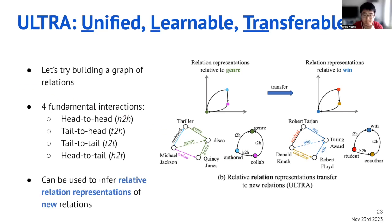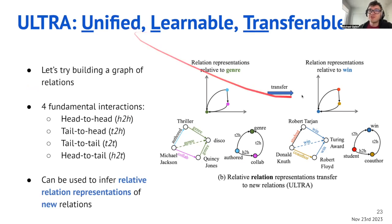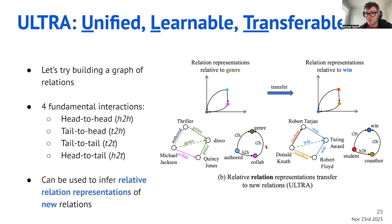Question from the chat: would this be transductive in terms of relations? No — we can transfer to graphs with completely different sets of relations. The only thing we learn as an embedding table is representations of those higher-order fundamental relation directions, which do not change. From that perspective we can learn their embeddings, but from all other perspectives — entities and relations — this is purely inductive inference.